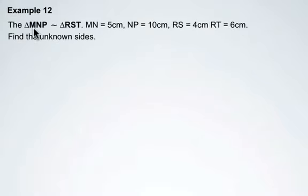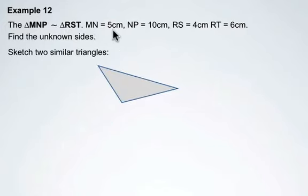In this example, we're given that triangle MNP is similar to triangle RST. We're also given that MN has side length 5 centimeters, NP is 10 centimeters, RS is 4 centimeters, and RT is 6 centimeters. We're asked to find the unknown sides.